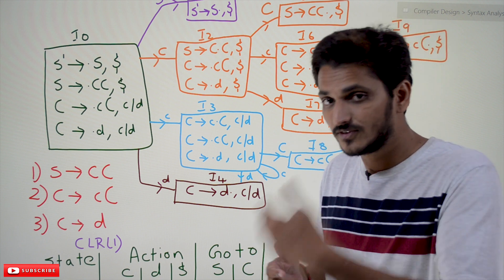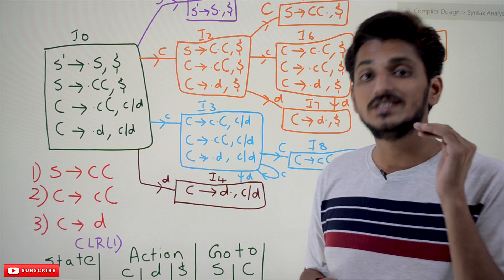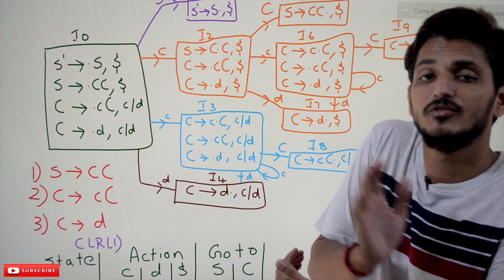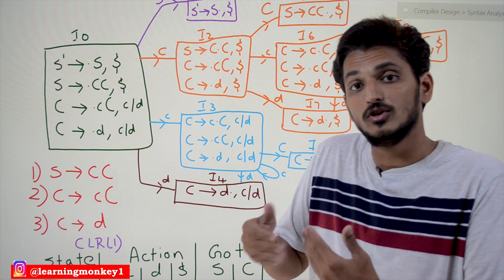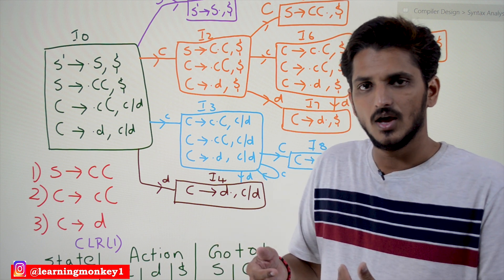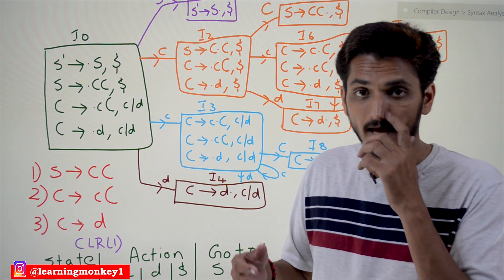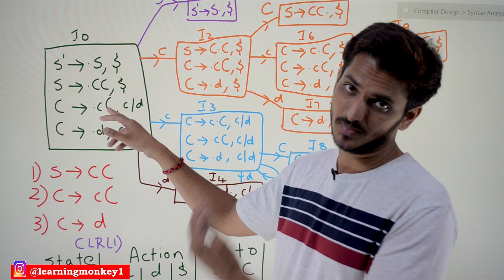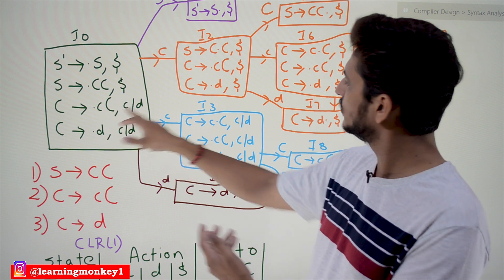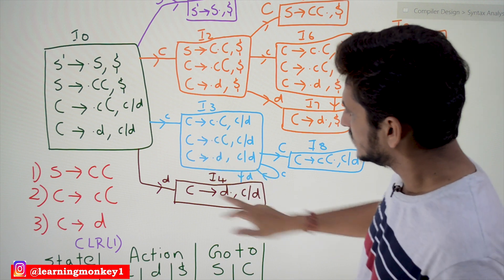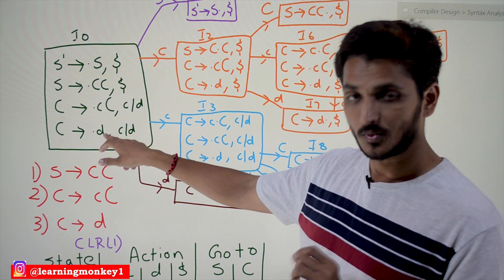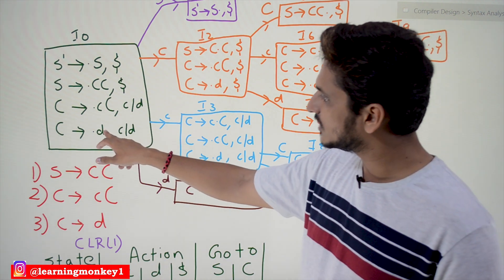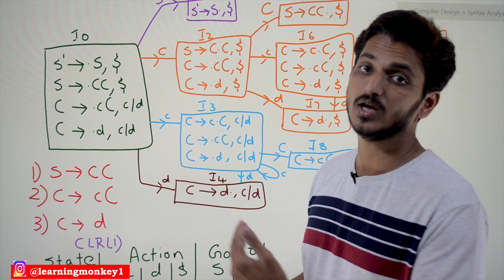In the Action column we either do a shift action or a reduce action. If dot is present at the middle or beginning of a production we do shift action; if dot is present at the end of the production we do reduce action. For example, in C tends to dot small c capital C, dot is at the beginning, so we do shift action — shift to third state. If we see terminal d, we are moving to fourth state, so shift to fourth state.